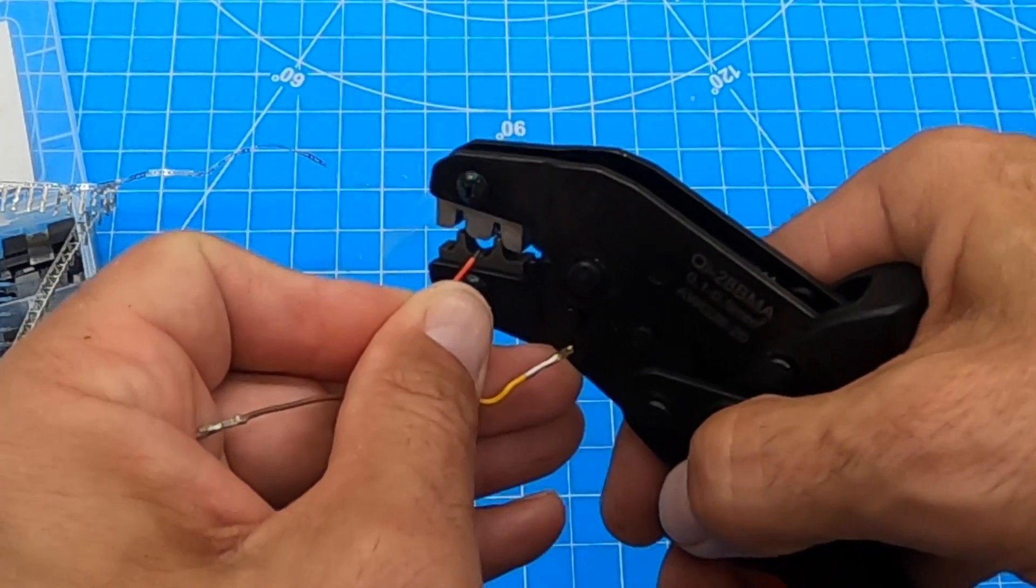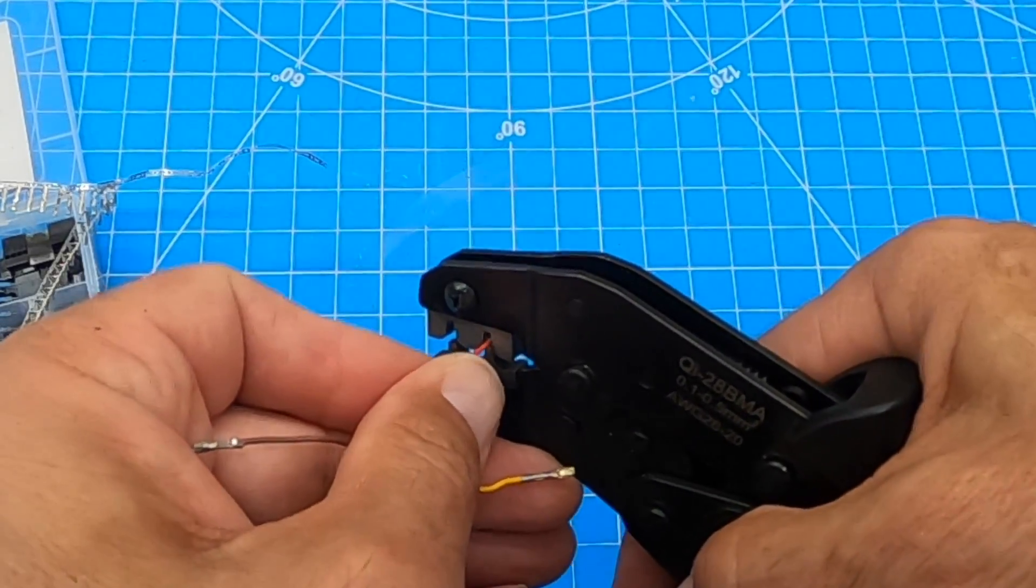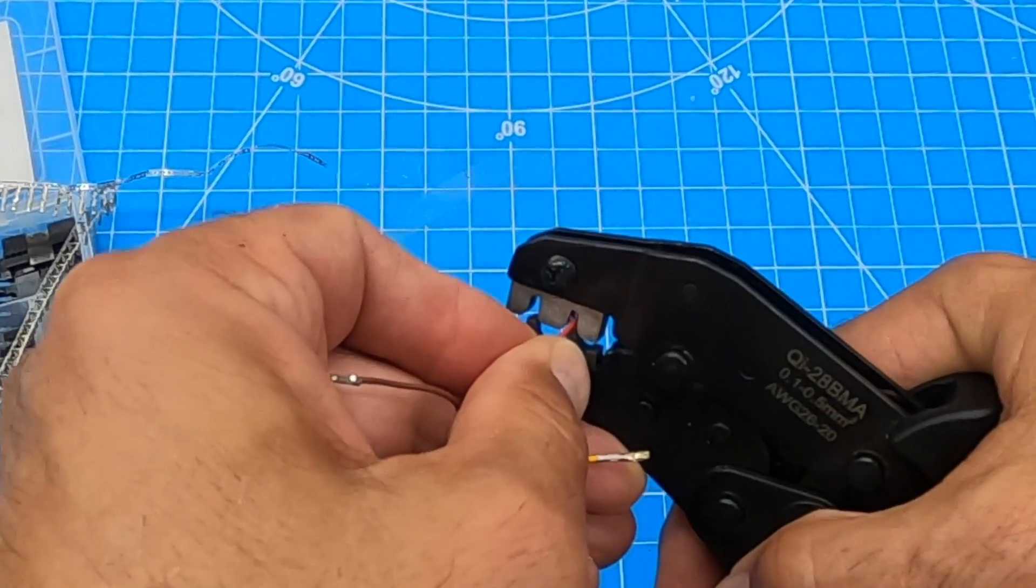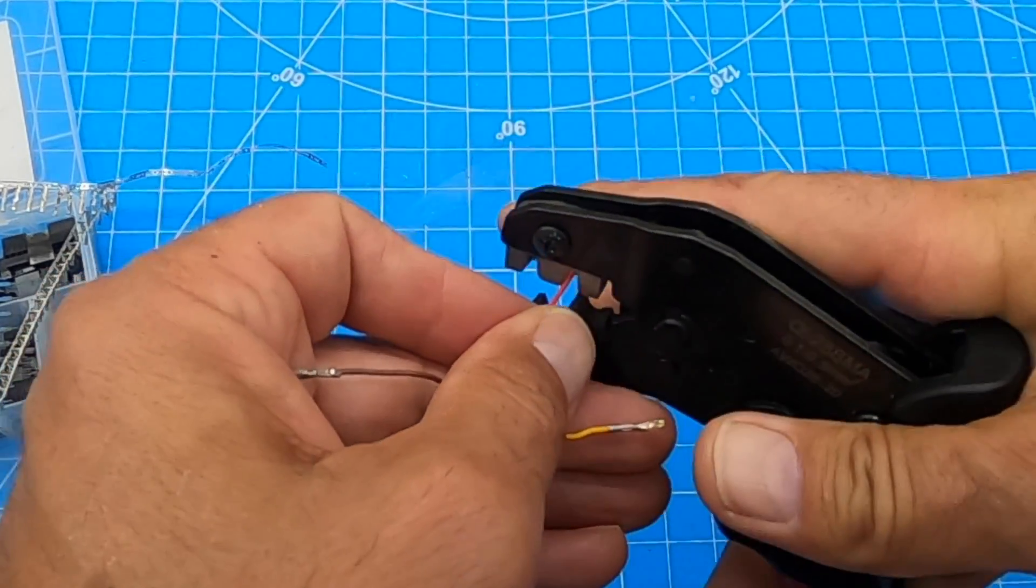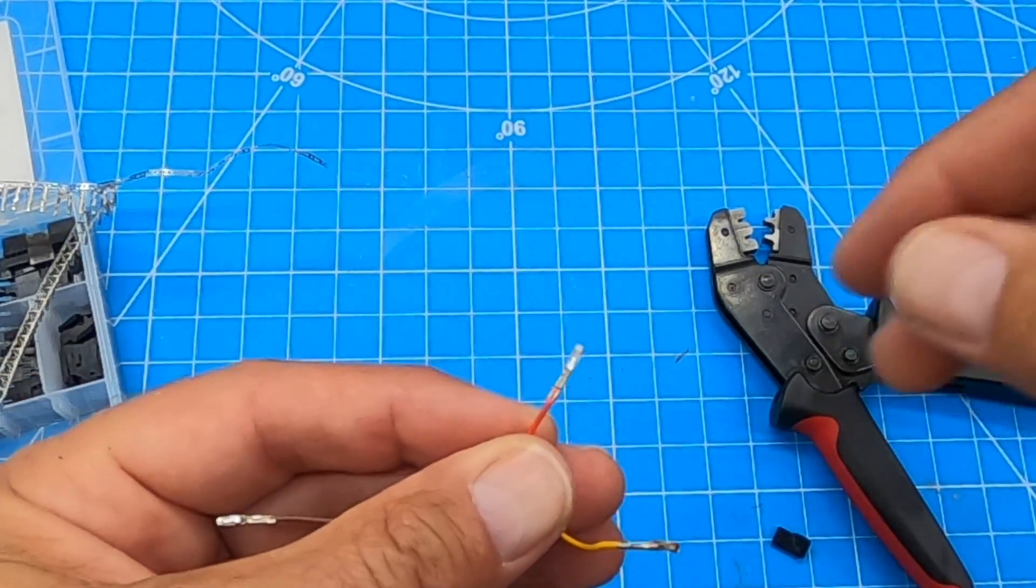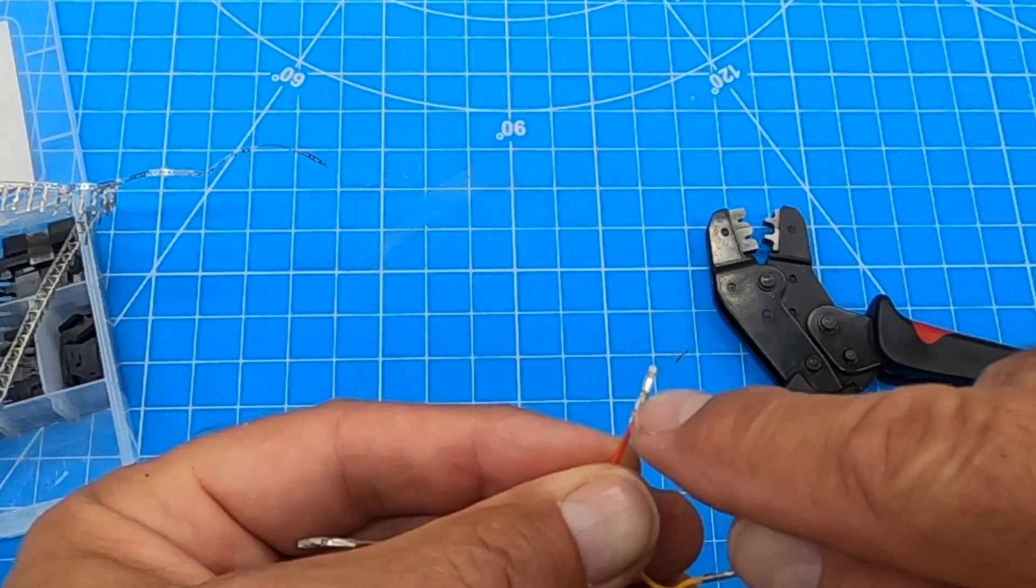Slide this opening there and make sure the insulation's in far enough and crimp down. Hard to do with the camera, but I'm happy with the fact that the insulation is in there. It's not too long, you don't have frayed ends all over the place. That's a good crimp.